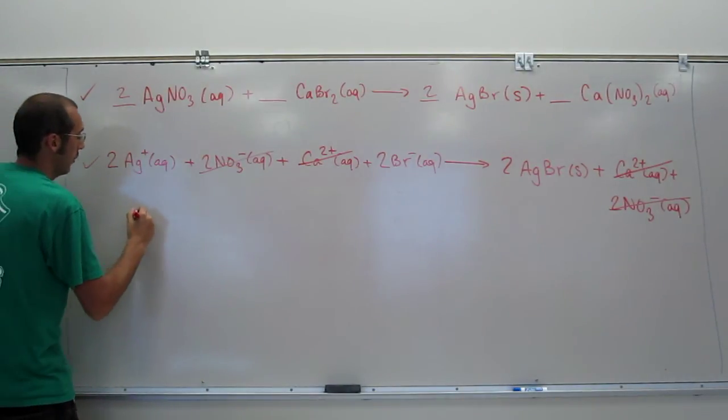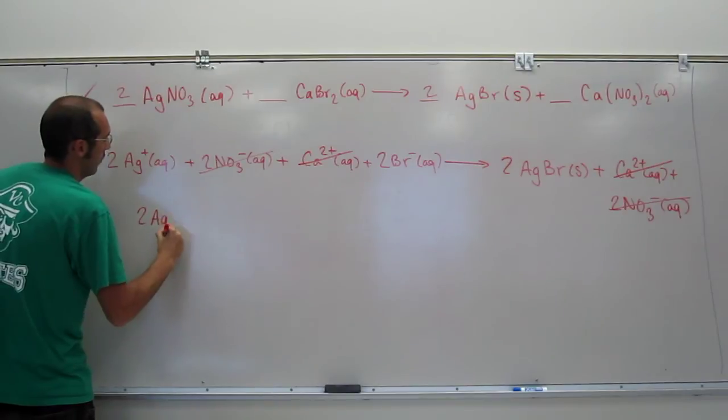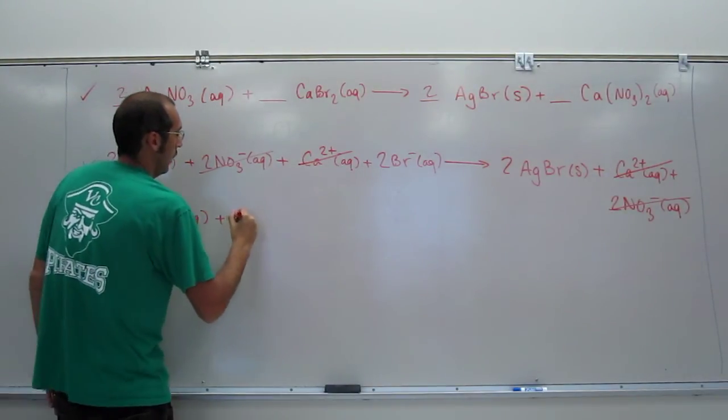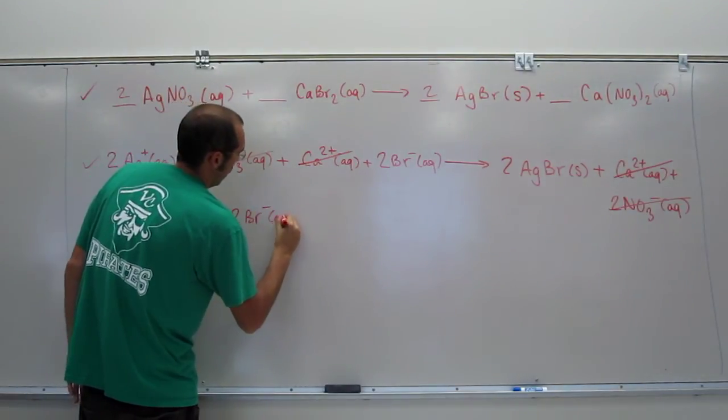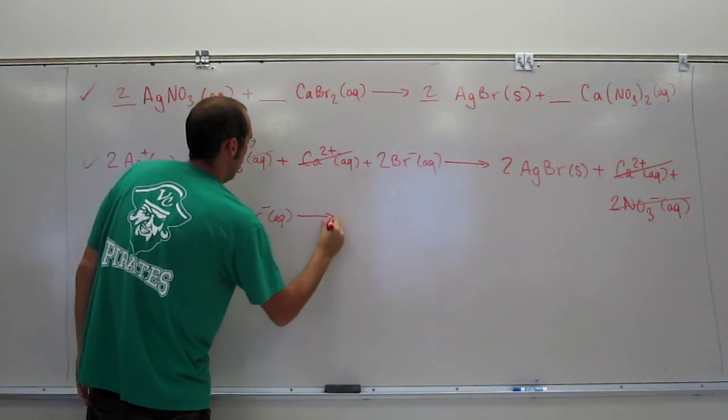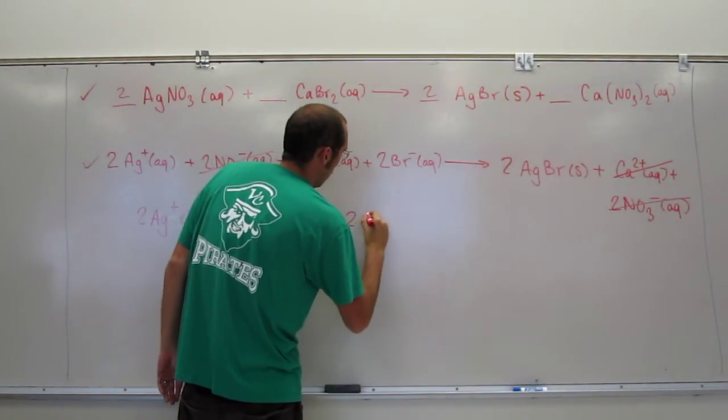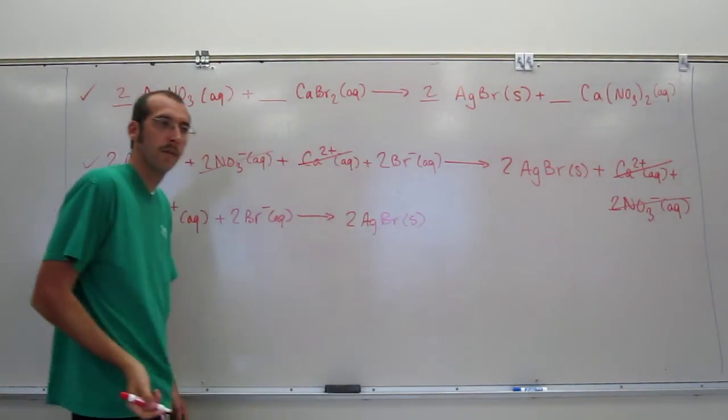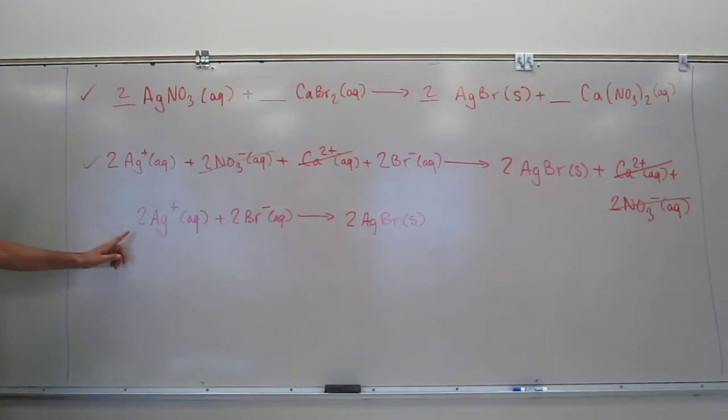Okay, so that's the total ionic. The net ionic is going to be, well, this is the beginning of the net ionic. It's going to be like that. Okay? And since all the coefficients are two, we can erase them.